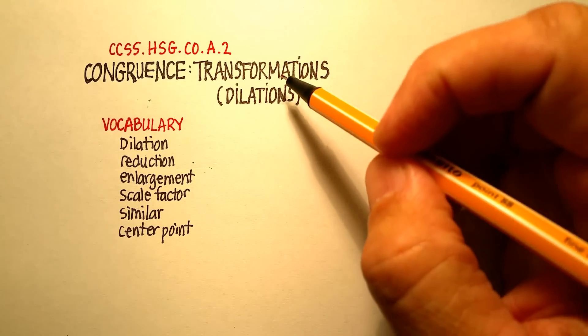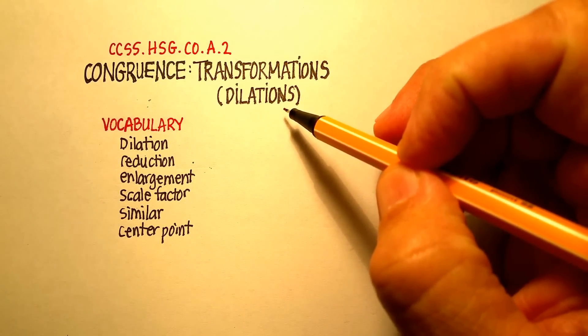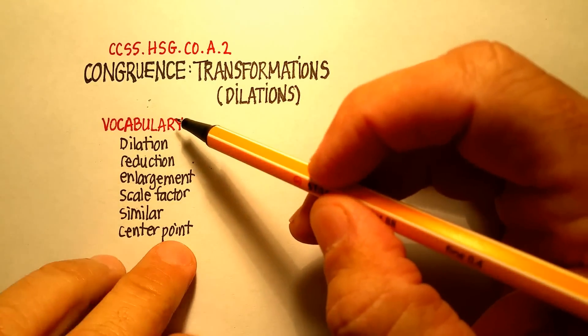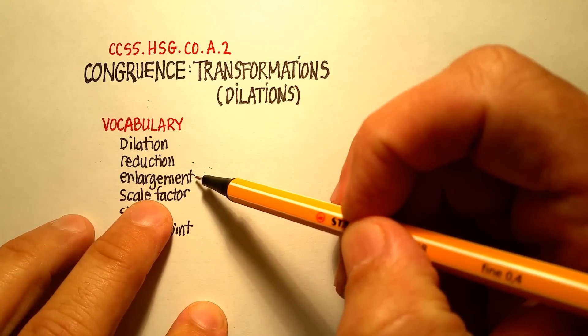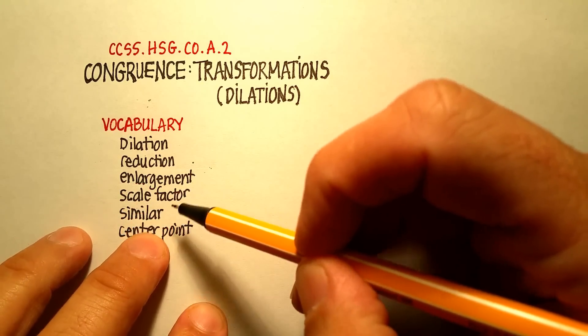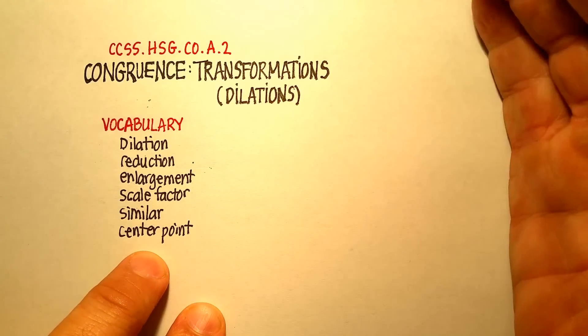Okay, in this video we're going to go over a type of transformation called a dilation. And these are the vocabulary words that we're actually going to cover. So what is a dilation? What is a reduction or an enlargement? What is the scale factor? And what does similarity have to do with dilations? And what is a center point?